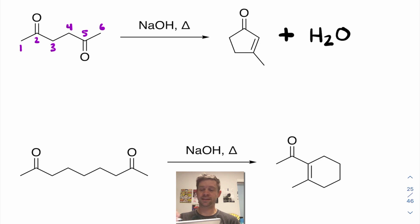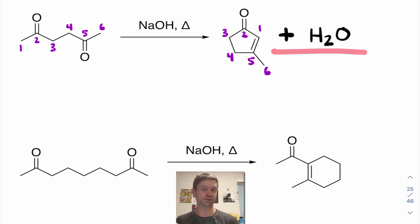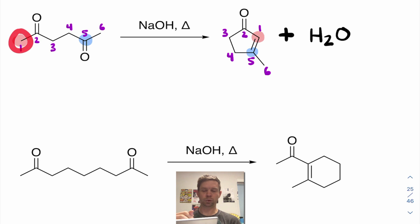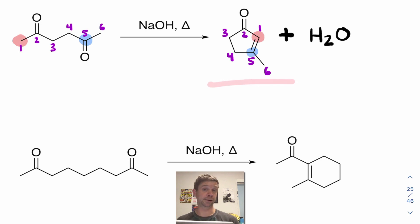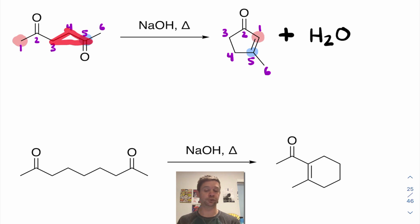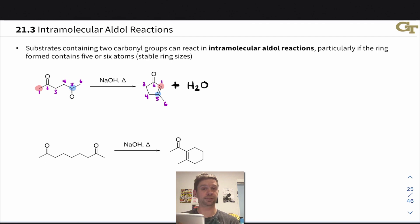What's actually shown involves carbon one as the nucleophile and carbon five as the electrophile, forming a double bond via the condensation. The reason this product predominates is that it gives a five-membered ring, which is much more favorable than the three-membered ring that would result from using carbon three as the nucleophile. So that's the key logic of this intramolecular aldol reaction.